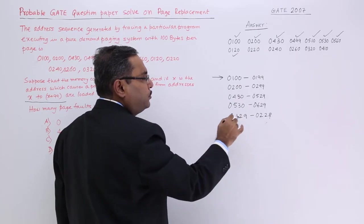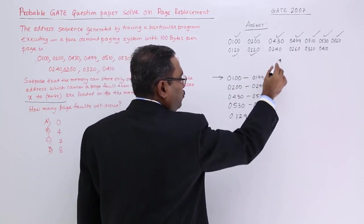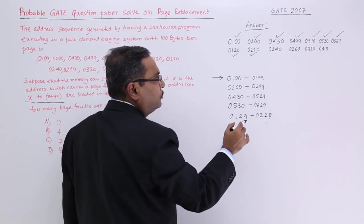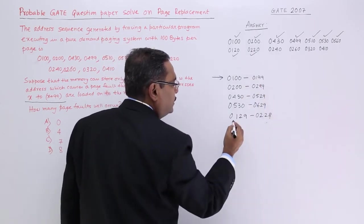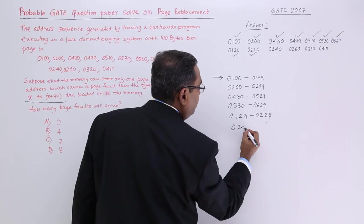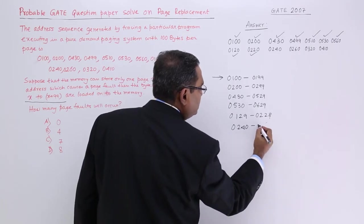Now, 220, for 220 there is no need to load any page. 240, 220 is there. But 240 is outside. So I shall go for 240.